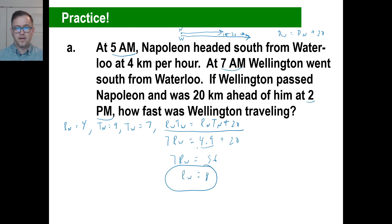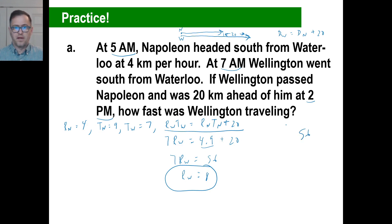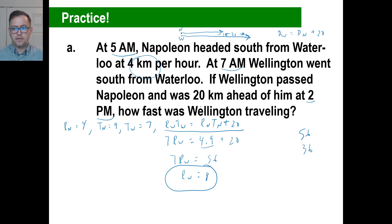Let's test it: Wellington goes 7 hours at 8 kilometers per hour — that's 56 kilometers. Napoleon goes 9 hours at 4 kilometers per hour — that's 36 kilometers. Wellington needs to be 20 ahead of Napoleon. 56 is 20 ahead of 36. Correct!